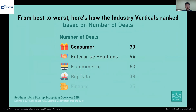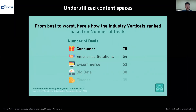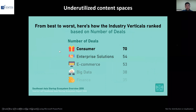This next mistake is underutilized content spaces, meaning that on the middle area — what we call the body area — you notice that on the left and right sides there's a lot of space. You're not maximizing the space in this body area. This is underutilized content spaces.